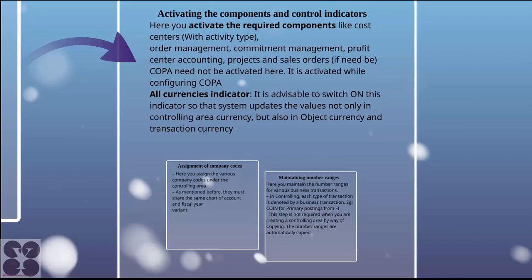Activating the components and control indicators is the most important step in controlling. When you activate required components like cost centers with activity types, order management, commitment management, profit center accounting, projects, and sales orders, note that the COPA module — profitability analysis — need not be activated here; it is activated separately as it is a separate sub-module. For all currency indicators, it is advisable to switch on this indicator so the system updates values not only in controlling area currency but also in object currency and transaction currency.